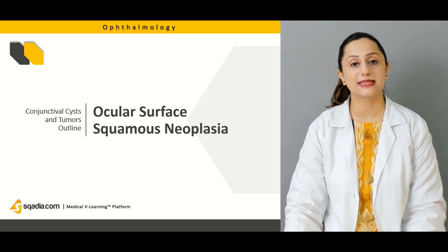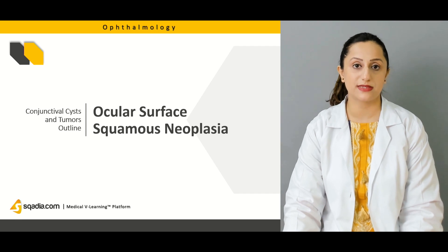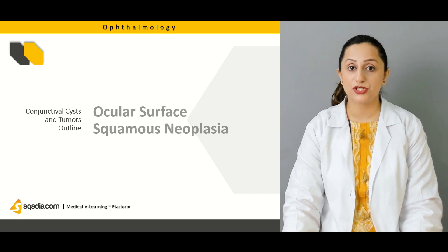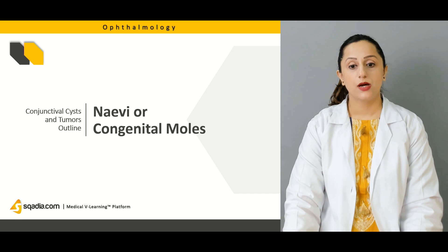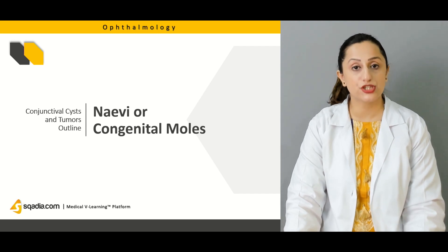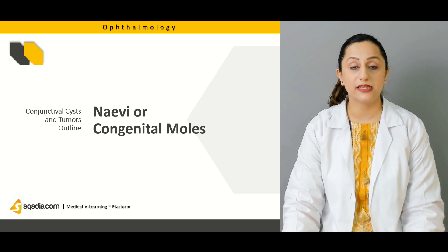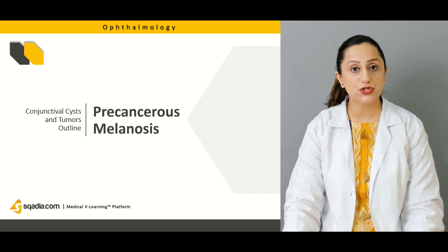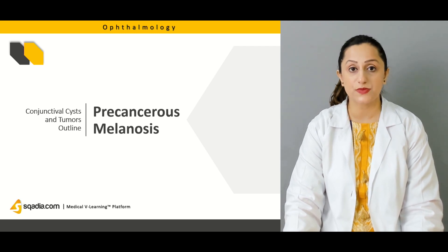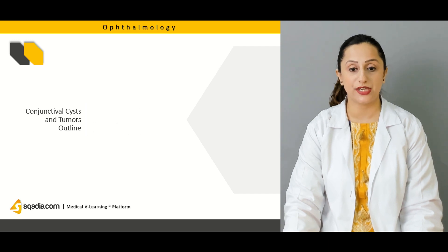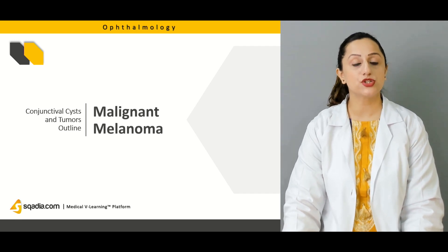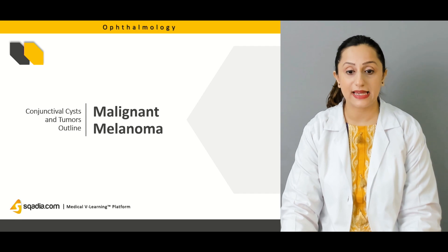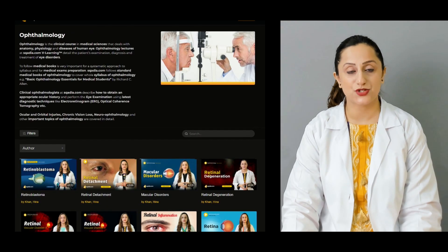Another variant we'll discuss is ocular surface squamous neoplasia, which can be one of the malignant conditions arising in the conjunctiva. We'll also briefly define nevi and congenital moles that arise in the conjunctival region, precancerous melanosis along with its signs, symptoms, and treatment modalities, as well as the condition known as malignant melanoma — its particular features and treatment guidelines.